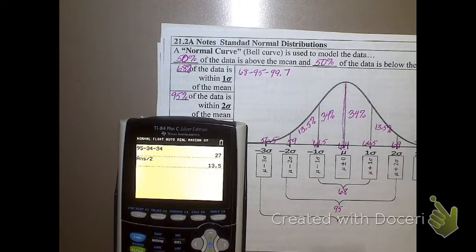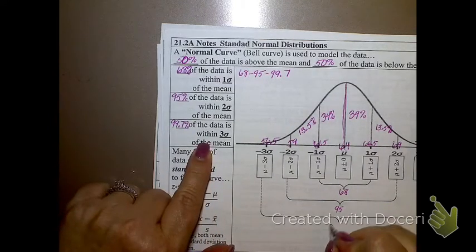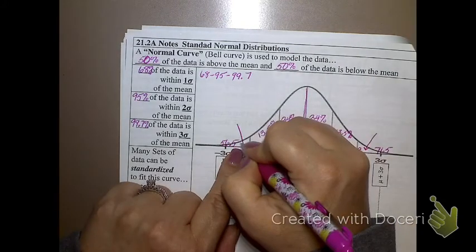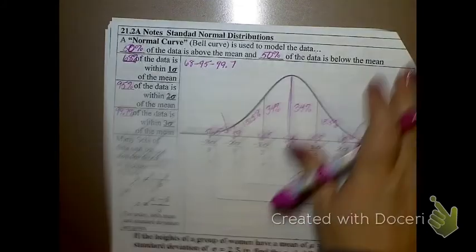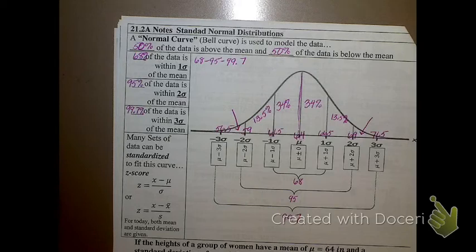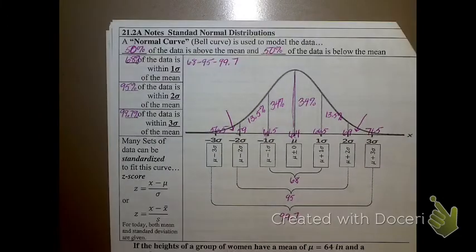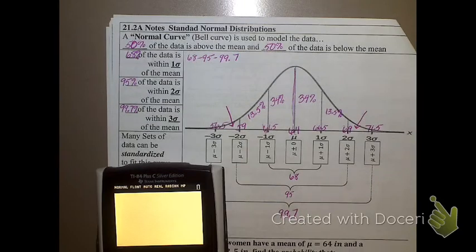See if you can do the next section. If between three standard deviations represents 99.7, see if you can find out what these two sections right here would represent. So, you getting there? You ready to talk about this one?